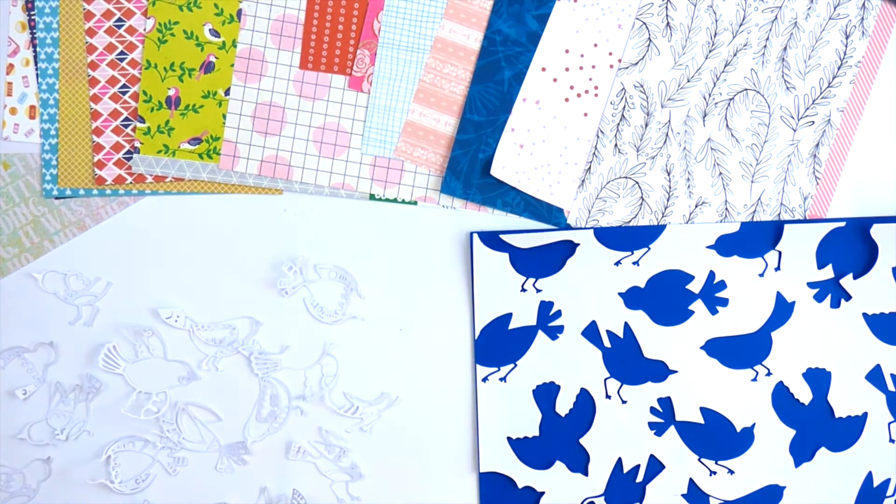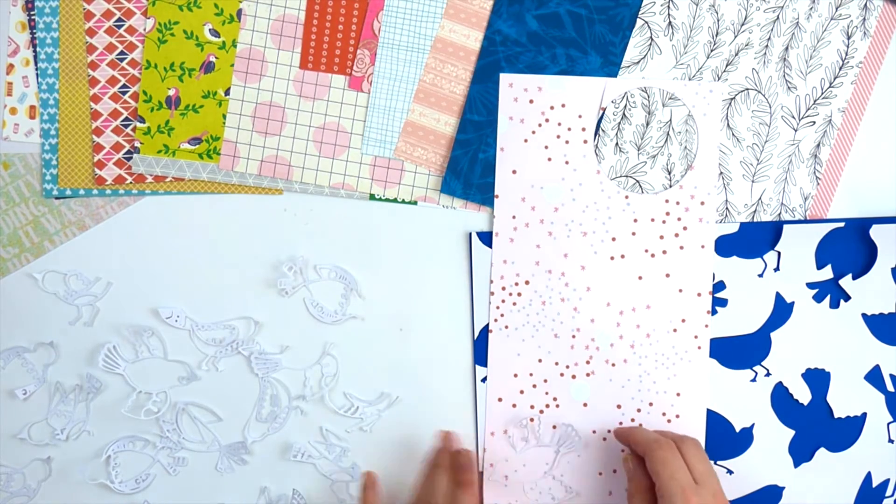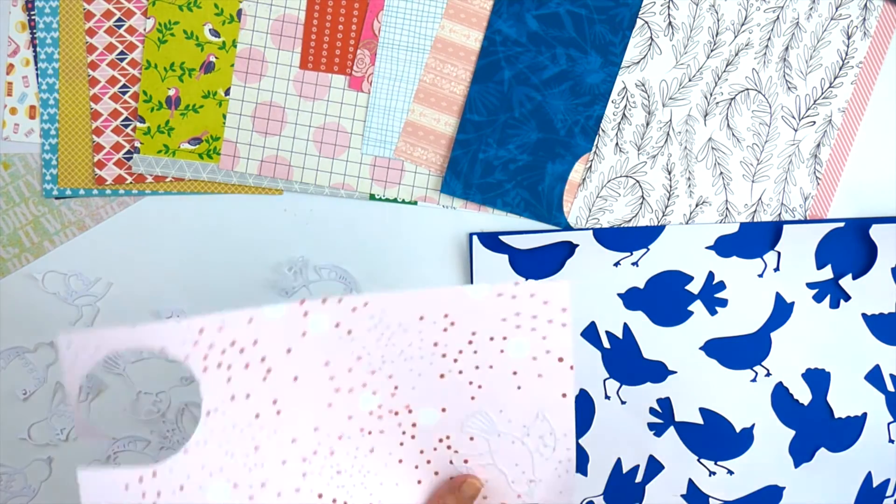This makes the bird nice and sticky and put it on top of your chosen pattern paper and then fussy cut it out. So lots of little steps to make this layout.